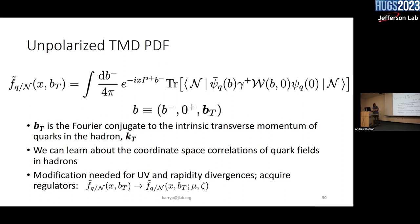This is the matrix element that we care about here — it describes a TMD with a tilde. This is a quark inside of a hadron state N, where N can mean pion, proton, nucleus, all of the above. It's a function of X, which is the same X that comes in the PDF — the collinear version, so the momentum fraction. It's also a function of BT. I'm going to be really focusing on the BT dependence. BT is the Fourier conjugate to KT, where KT is the intrinsic transverse momentum of the quarks in the hadron.